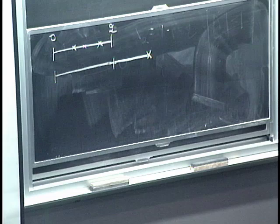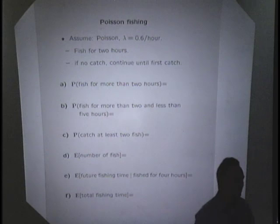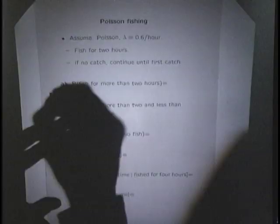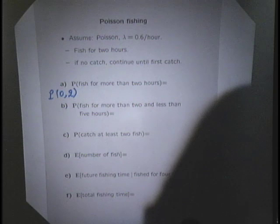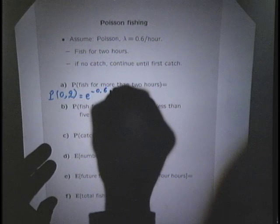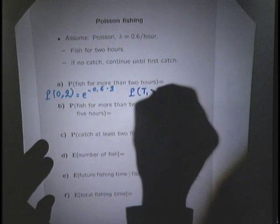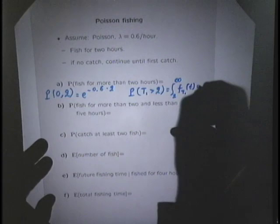What is the probability of fishing for more than two hours? You will fish for more than two hours if and only if no fish were caught during those two hours, in which case you must continue. This is just the probability of catching zero fish in two hours: e to the minus lambda times tau. Equivalently, it's the probability that the first catch happens after time two — the integral from two to infinity of the exponential density.